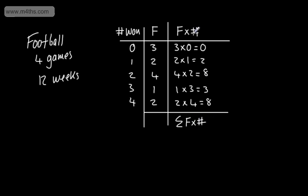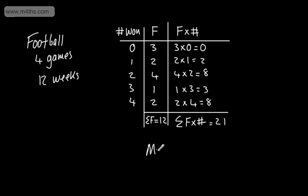x is the number of games that you've won. So: 3×0 = 0, 2×1 = 2, 4×2 = 8, 1×3 = 3, 2×4 = 8. Adding those up: 0 + 2 + 8 + 3 + 8 = 21. So in total I won 21 games.